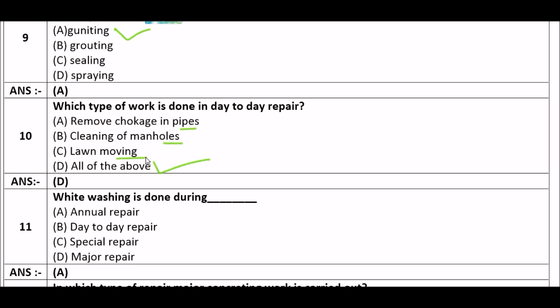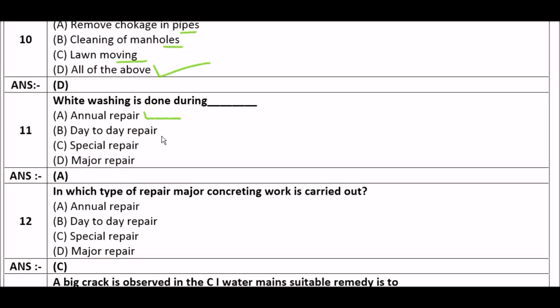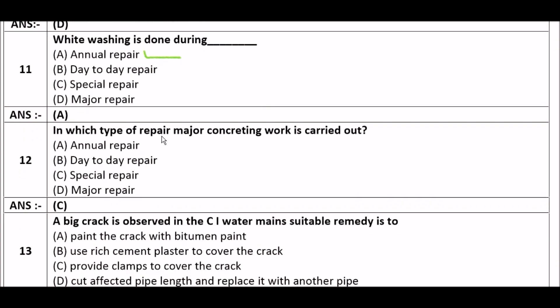Next question: Whitewashing is done during — option A: annual repair, option B: day-to-day repair, option C: special repair, option D: major repair. The right answer is option A, annual repair. Whitewashing is done during annual repair.